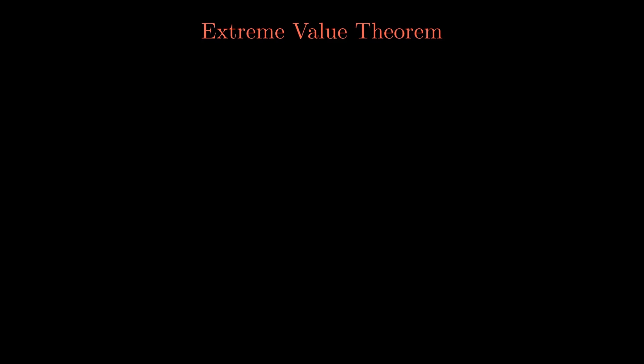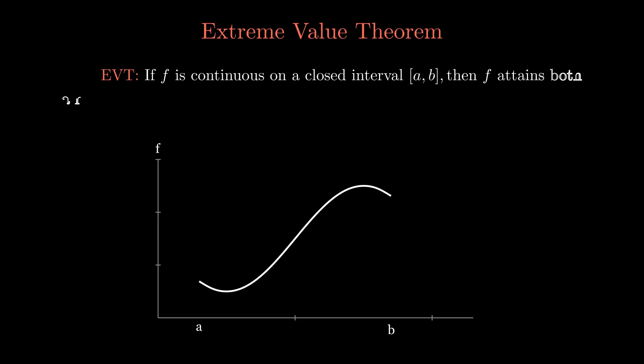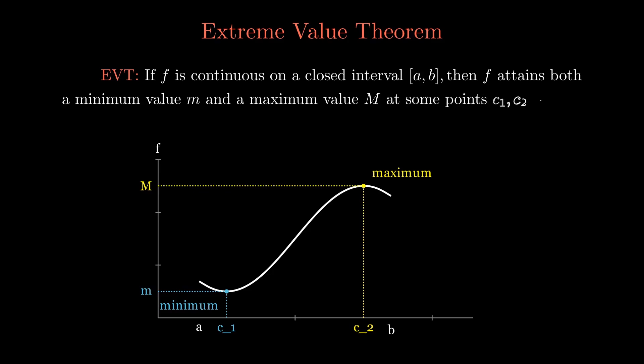Now the Extreme Value Theorem, the second theorem here, states that essentially on the same conditions that are met, continuous on the closed interval, F will take at least an absolute minimum and an absolute maximum. It must have one of these. And of course, the endpoints themselves can actually be maximums and minimums. So very intuitive.